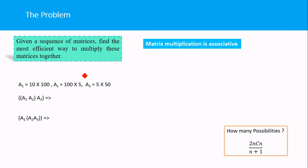Suppose you are given three matrices A1, A2, and A3. A1 has the order 10 by 100, A2 has the order 100 by 5, and A3 has the order 5 by 50. We have to multiply these three matrices together.